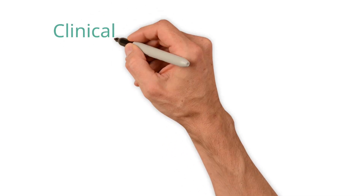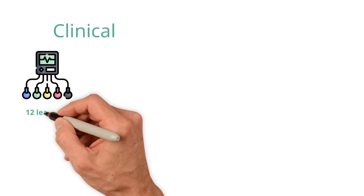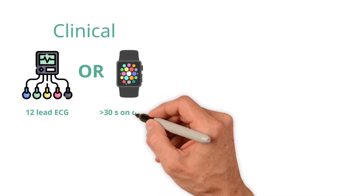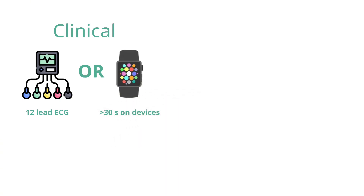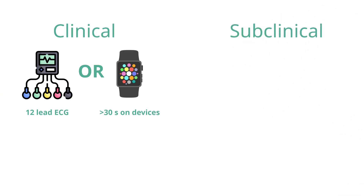Clinical AF is usually diagnosed with a 12-lead ECG, but Holter monitoring or other device monitoring can be used to diagnose AF, generally when at least 30 seconds are captured. Anything less than this is considered subclinical AF.